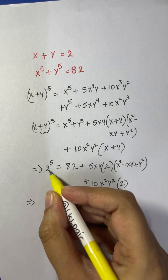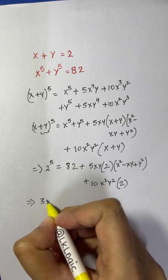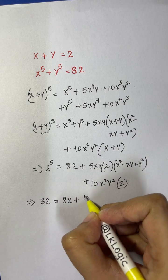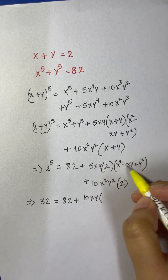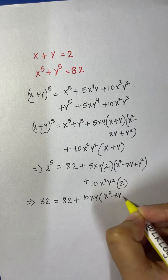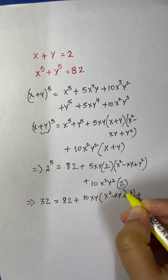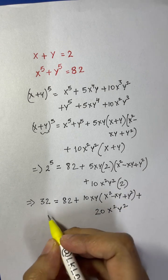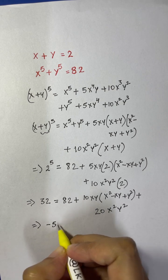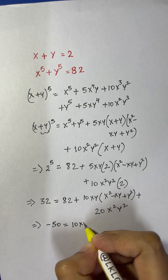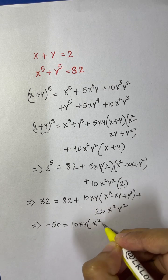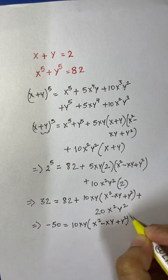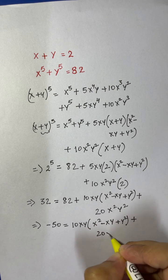2 to the power of 5 is 32, so 32 equals 82 plus 10xy times (x squared minus xy plus y squared) plus 20x squared y squared. Rearranging gives negative 50 equals 10xy times (x squared minus xy plus y squared) plus 20x squared y squared.